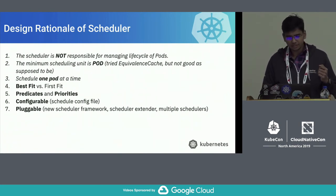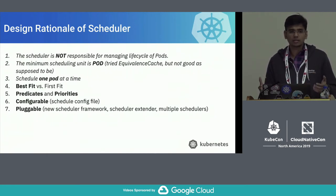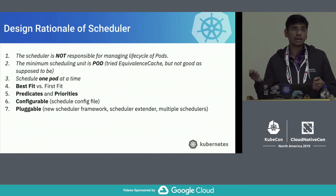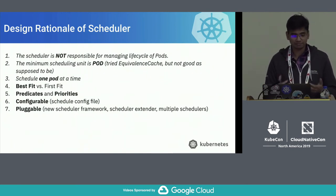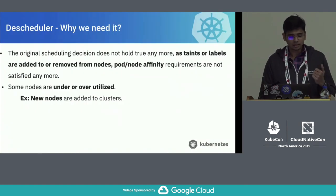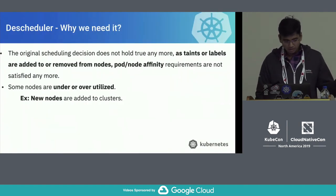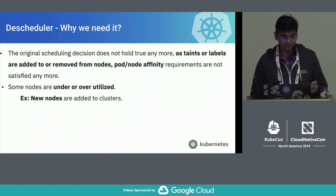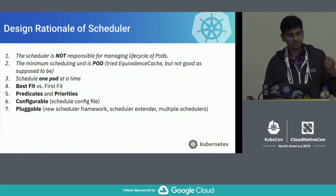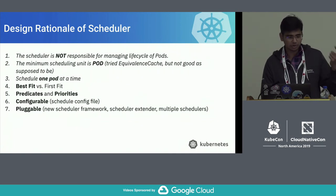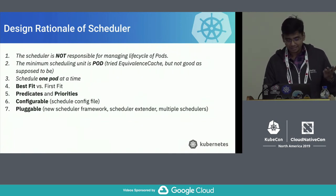Another important feature is multiple schedulers. In Kubernetes, you can specify within the pod spec which scheduler you would like your pod to be scheduled by — this extensibility is available to the user. Going back to the first three design rationale points — scheduler not managing lifecycle, minimum scheduling unit being a pod, and scheduling one pod at a time — there are some side effects of those choices.